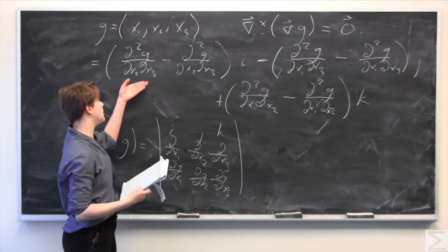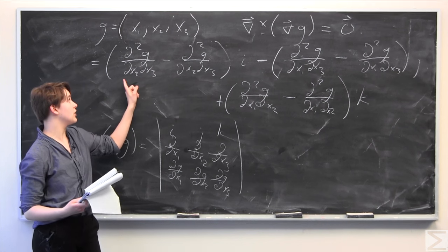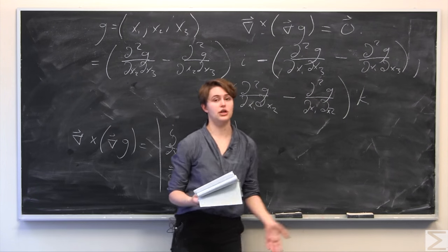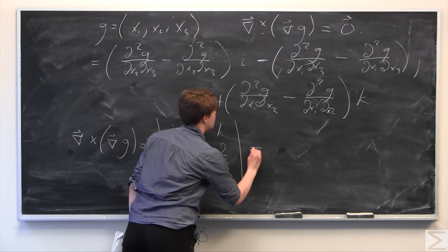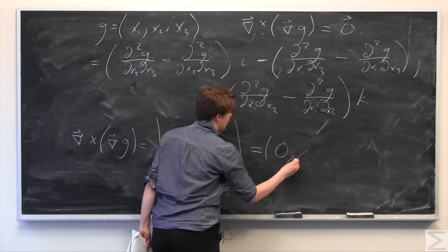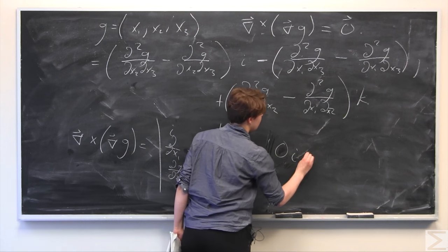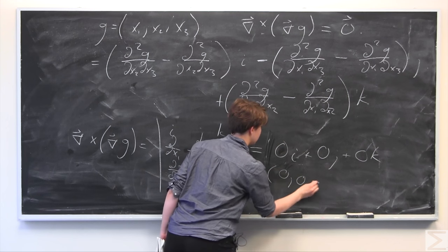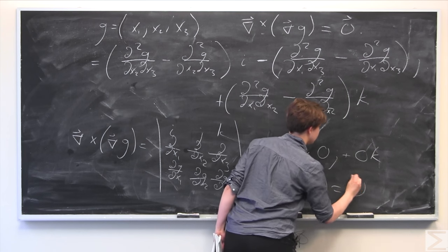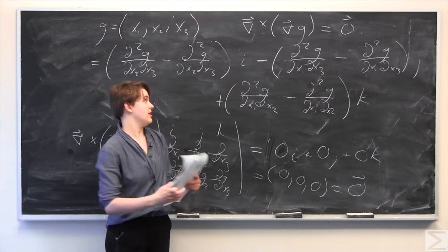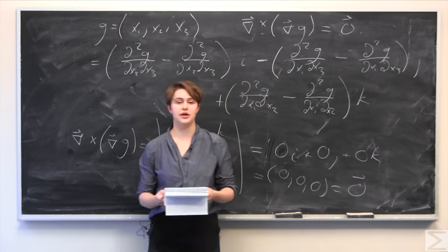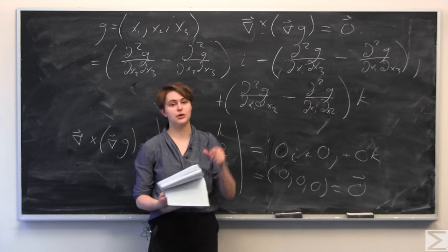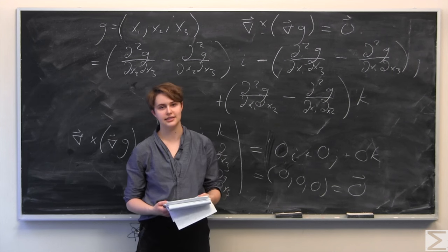As you can see, inside each component we have the same terms — for example, ∂²g/∂x2∂x3 minus ∂²g/∂x2∂x3 — so all these expressions cancel out. We're left with 0i + 0j + 0k, which equals the vector (0, 0, 0), the zero vector. So we've proved that the gradient crossed with del g equals the zero vector. It's important to note that we get a vector as the answer because the cross product always yields a vector.